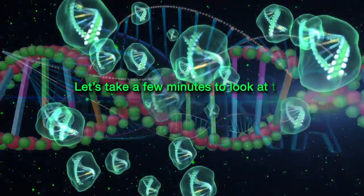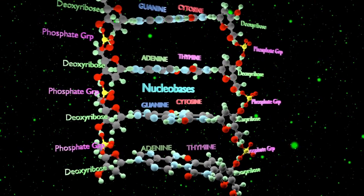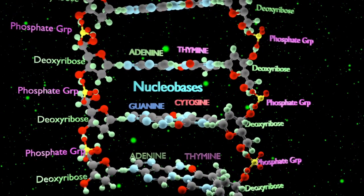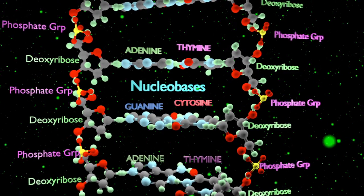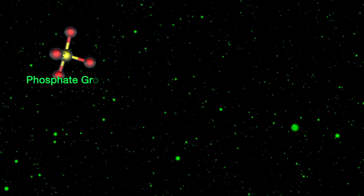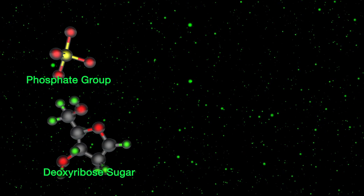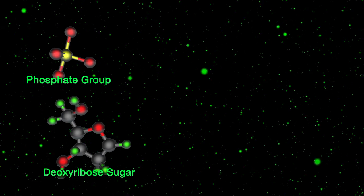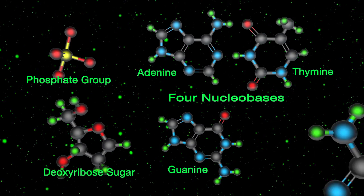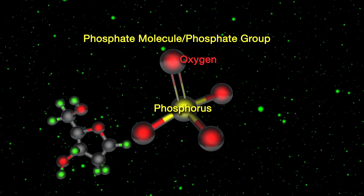Let's take a few minutes to look at the basic structure of DNA. If we examine this graphic of a section of a DNA molecule, it looks quite complex. Let's break the DNA molecule down into its basic building blocks so we can get a better understanding of how DNA is put together. DNA is basically composed of a phosphate molecule, referred to as a phosphate group, a sugar molecule, referred to as a deoxyribose sugar molecule, and four nucleobases: adenine, thymine, guanine, and cytosine. The phosphate molecule is composed of one phosphorus atom and four oxygen atoms.